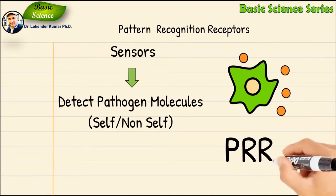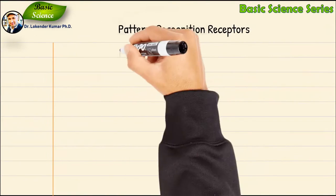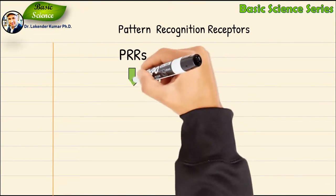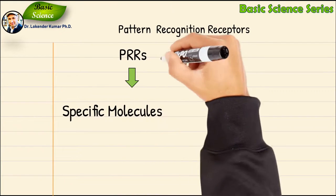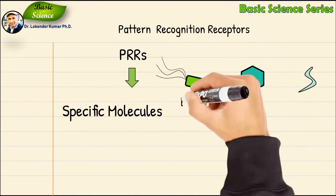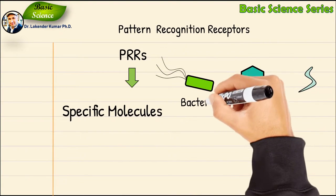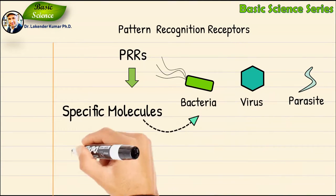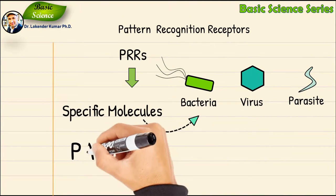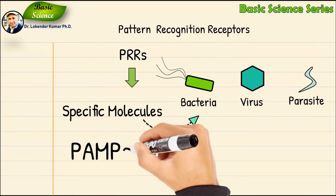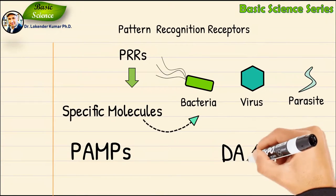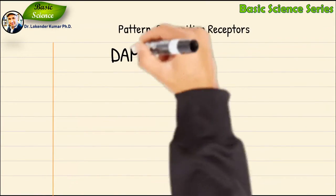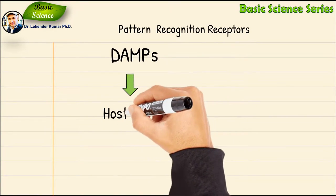What PRRs sense are the specific parts of viruses, bacteria, and parasites. These specific parts are called PAMPs — pathogen associated molecular patterns. There are also DAMPs — damage associated molecular patterns.